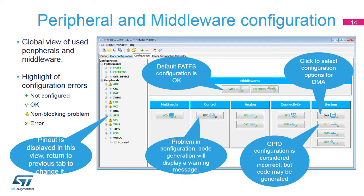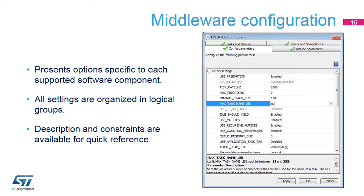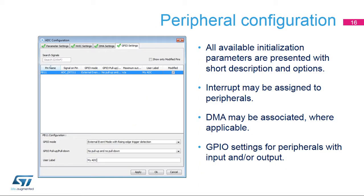To add more peripherals and components, return to the Pinout tab. Each middleware software component has options that are different, but they are all presented in a similar fashion, giving easy access to initialization options and providing informative descriptions. When configuring a peripheral, the dialog window shows basic parameters, dependencies, and constraints. Simple drop-down menus are used when applicable.